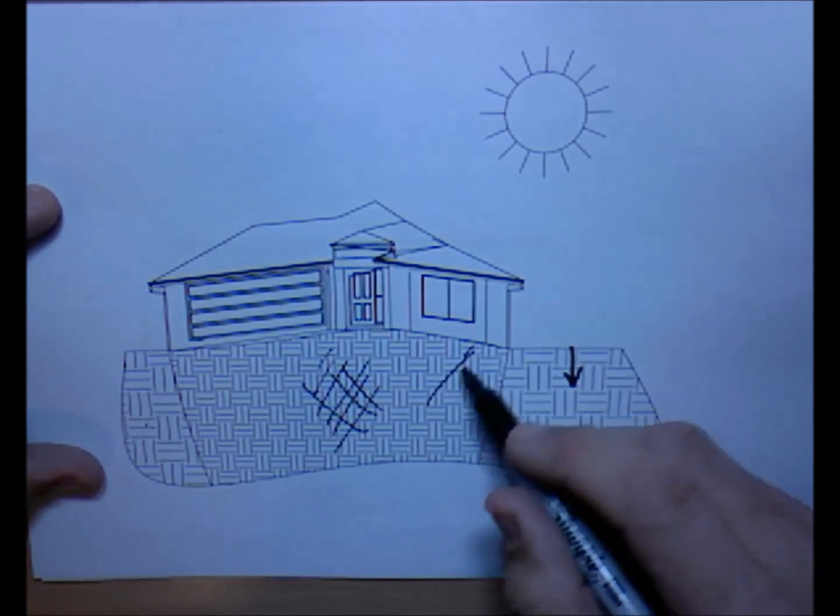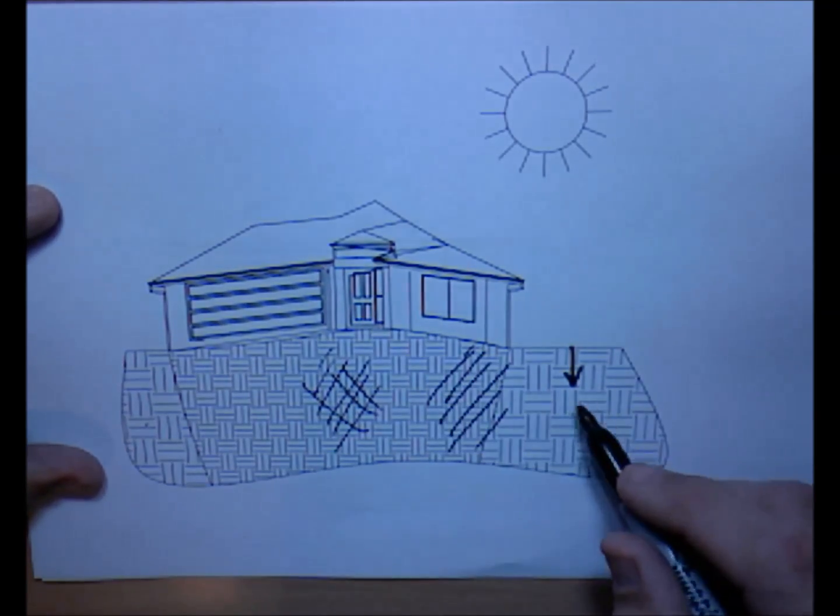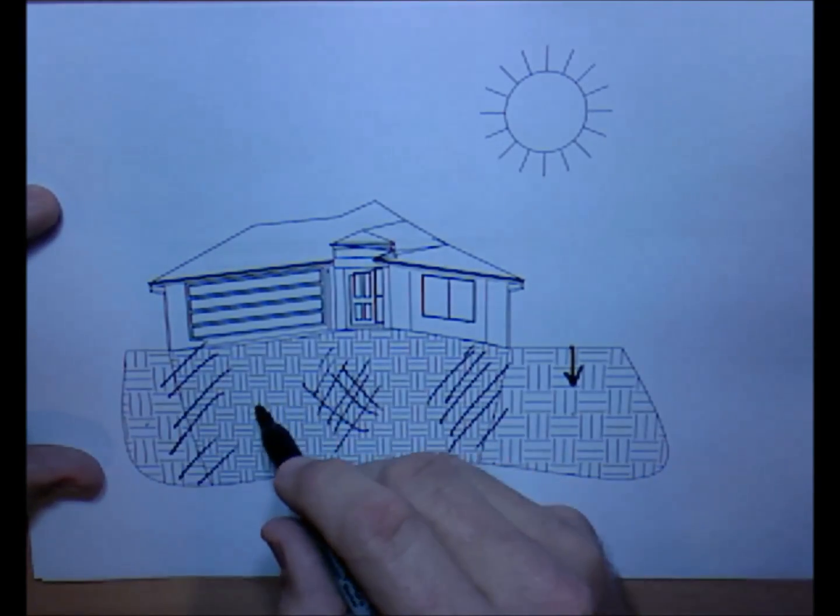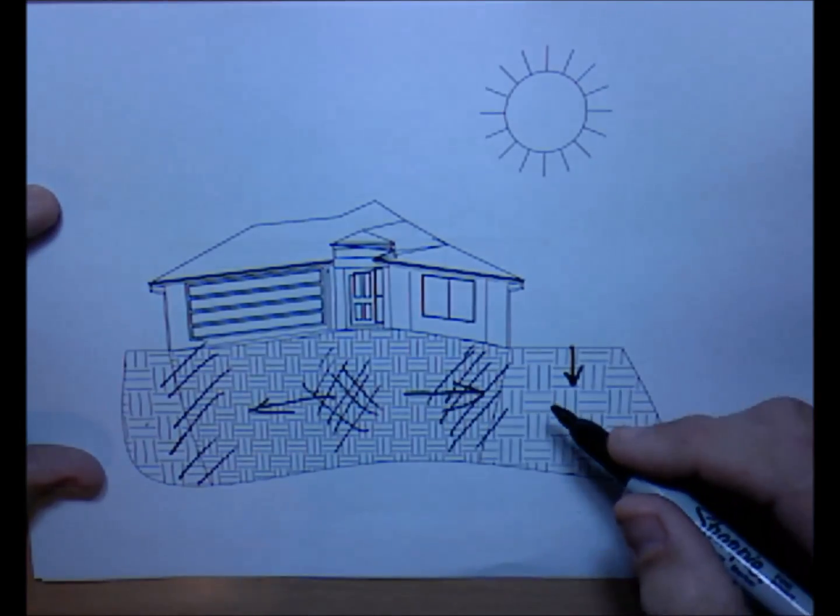Again, there's a transition zone between dry soils and wetter soils as moisture transitions from under the house towards the dry zone.